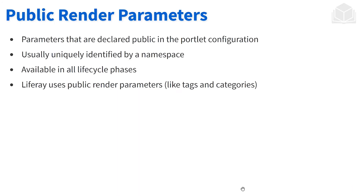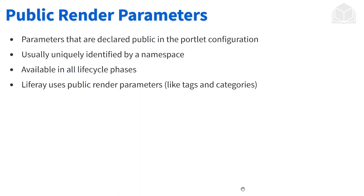Another way that interportlet communication can occur is through what we call public render parameters. As the name implies, we'll have a parameter within the render phase that's made public or made available to other portlets. Typically, the public render parameter is namespaced, so we don't need to worry about conflicting parameters. This parameter is made available throughout all phases of a portlet's lifecycle, whether it's the render phase, the action phase, or anything in between.